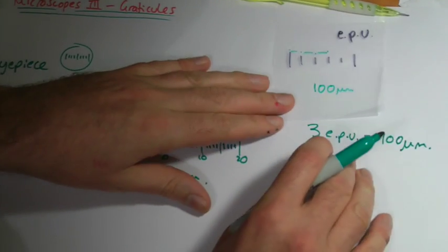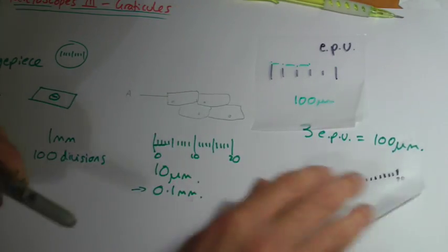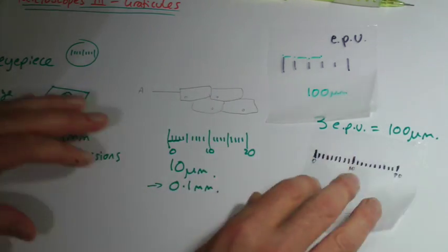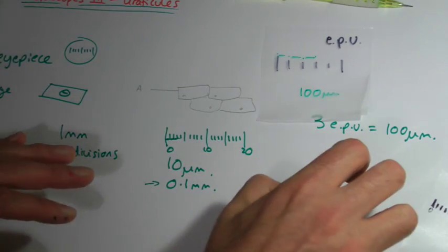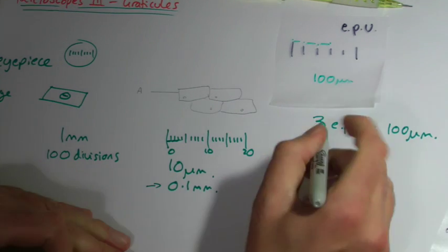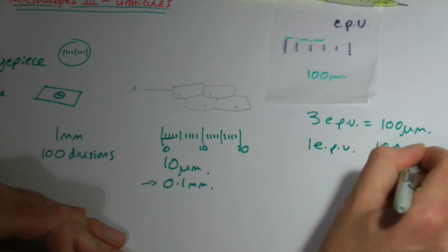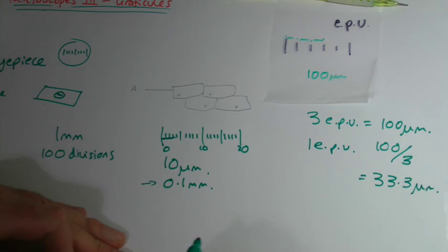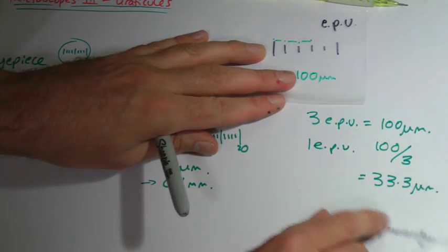That's on that particular magnification. Every time you change the objective lens, because the lenses have slight differences in them, you would have to recalibrate this. You might think it should come out exactly the same — no, you've got to redo it every time. So, if three eyepiece units are a hundred microns, then one eyepiece unit is going to be a hundred divided by three microns, which is 33.3 microns. So I took the number of microns and divided it by the eyepiece units.